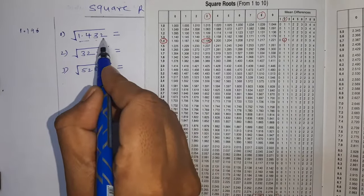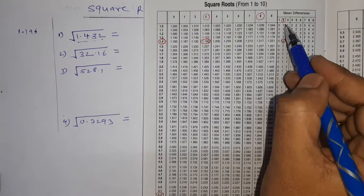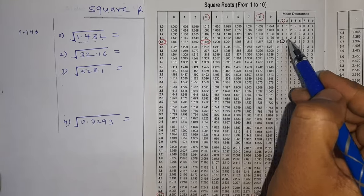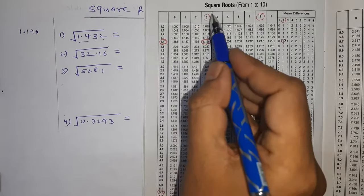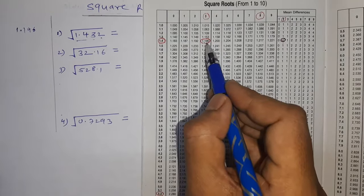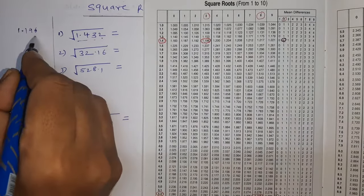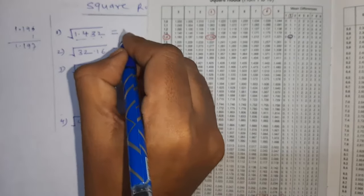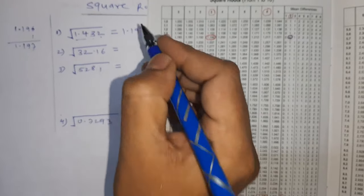Fourth digit 2, in mean difference we'll see 2. Here it is 1. So 1.4, 3 and 2 gives us 1.196 and 1. So total is 1.197. So answer is 1.197.